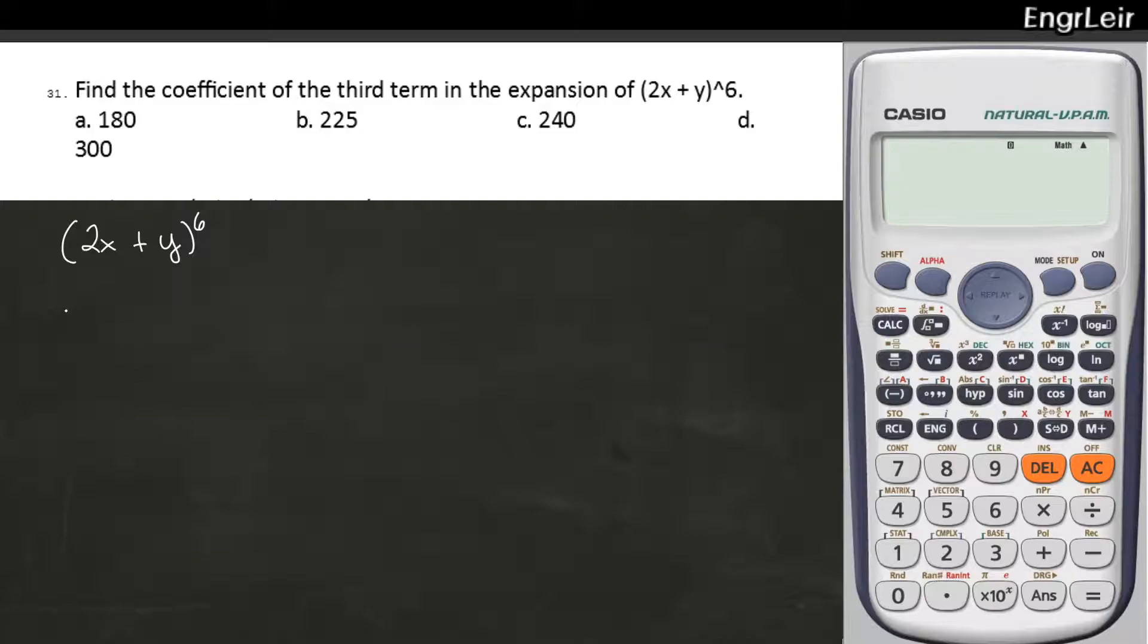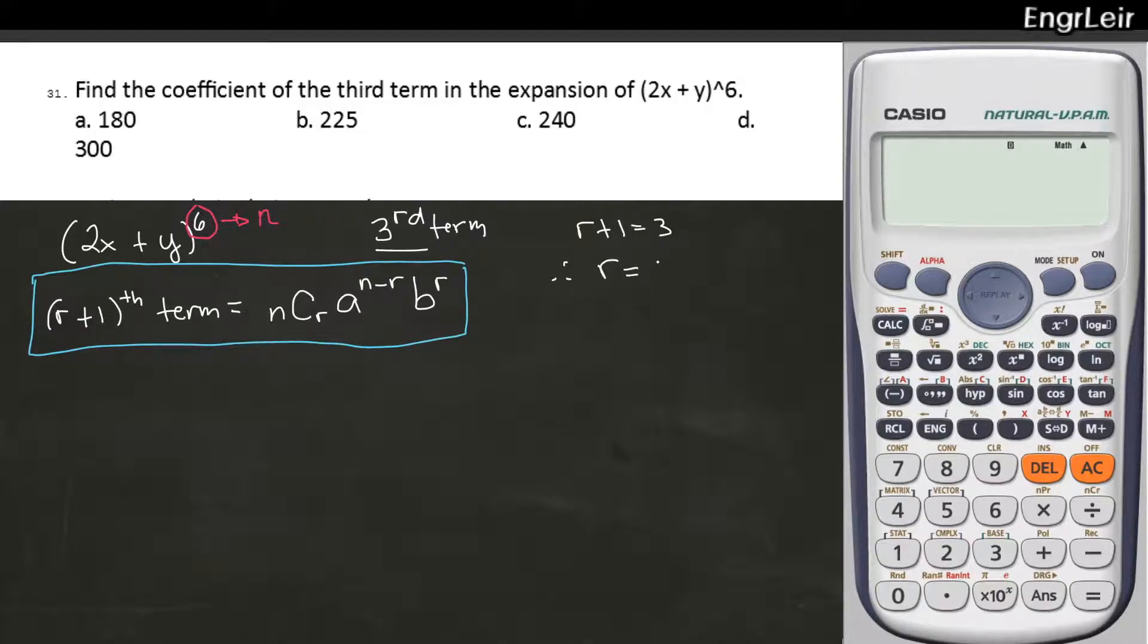Gagamitin natin yung binomial theorem natin. Ang sabi sa binomial theorem, r plus 1 term mo. This is actually equal to n combination r. Yung first term sa loob ng binomial raised to n minus r, b raised to r. Tandaan nyo ito? So ano yung r? Ano yung n? Yung n is the degree nung i-expand yung binomial. Ito yung n. At yung r, r plus 1 term, given naman. Ang hinahanap niya is third term. Ibig sabihin, yung r plus 1 ko is equal to 3, or yung r ko must be equal to 2. So r is equal to 2.